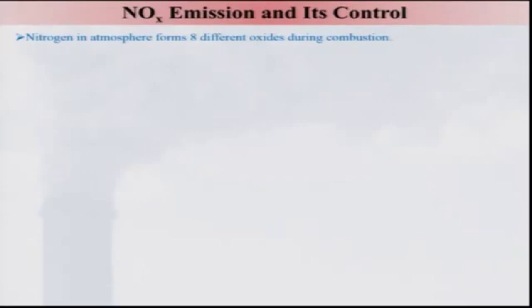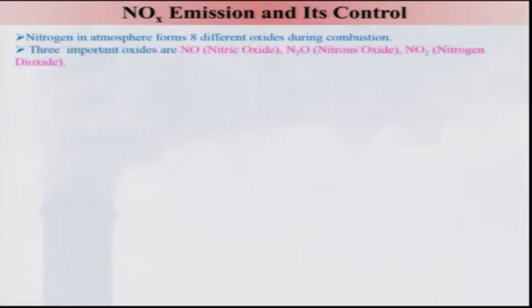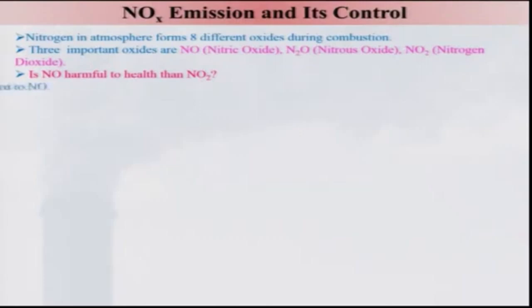NOX emission control is very important because it causes a lot of health issues, as we had discussed — particularly the pharynx, nostrils, and other parts get affected very easily. Nitrogen in the atmosphere forms eight different oxides during combustion. However, we will only consider three of them as they are important: nitric oxide, nitrous oxide, and nitrogen dioxide. NO2 — nitrogen dioxide — is more harmful as compared to nitric oxide.